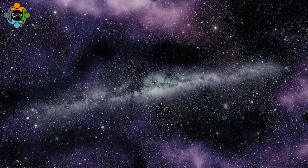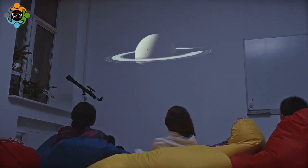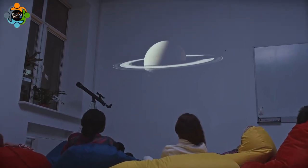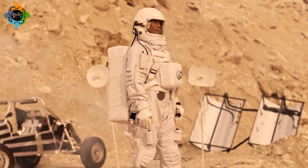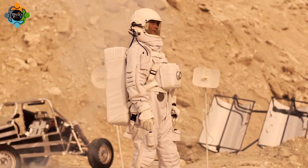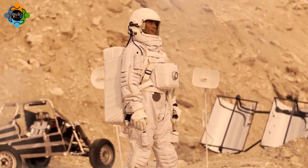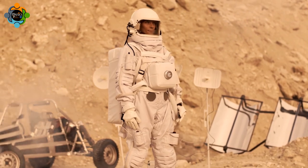our solar system and has been used to study and understand the orbital characteristics of planets in other star systems. By applying this law, astronomers can determine the distances of exoplanets from their host stars and predict their orbital periods.